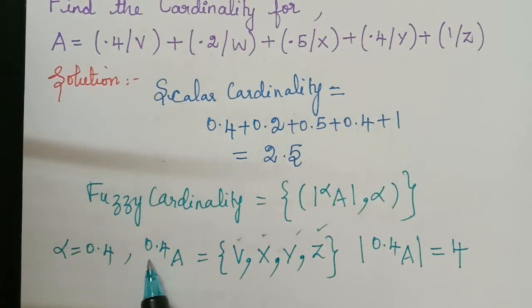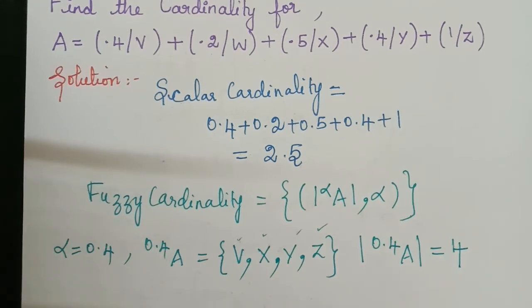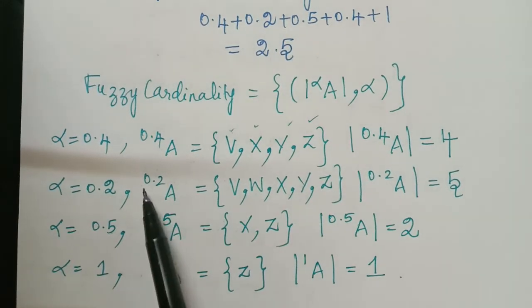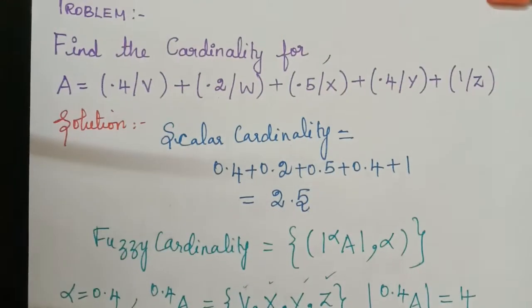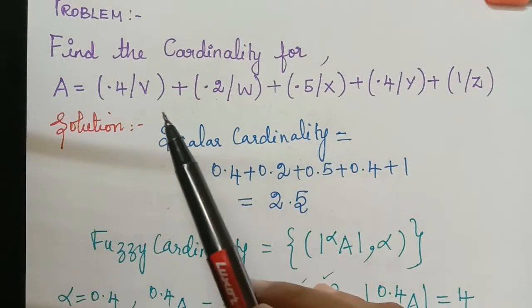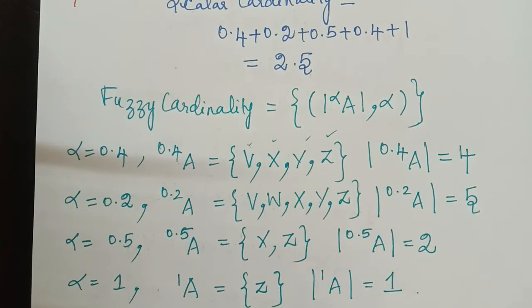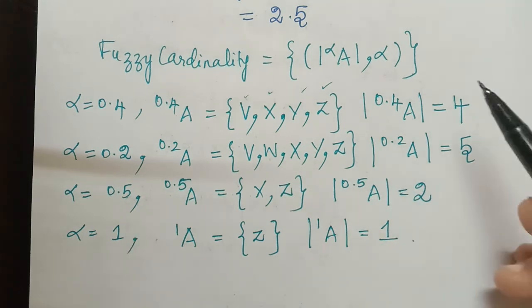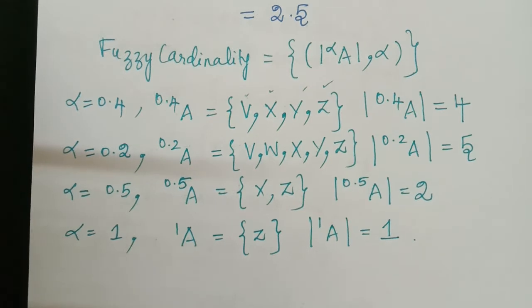Similarly like this for all the values of alpha we have to list out. So I will do and show that here now. So for each value of alpha I have found the alpha cut sets here. That is for 0.2 alpha cut of A will be equal to all those elements for which the membership grade is greater than or equal to 0.2. So all these elements will fall into that set. So we have this set and its cardinality is 5. So similarly we have to find for 0.5 and 1. So now these are the alpha cut cardinalities that is for the level cut sets.